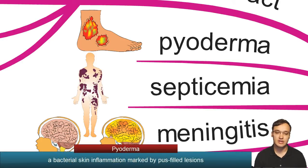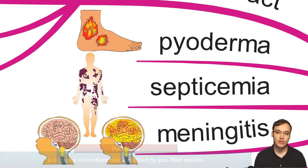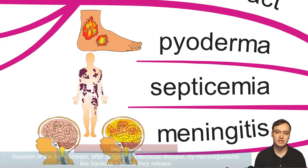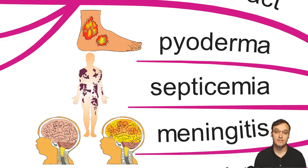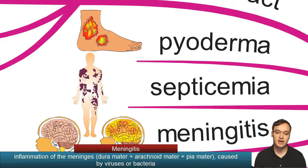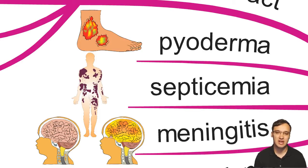Pyoderma shows reddish coloration of the skin with edema and pus — a serious bacterial skin infection. Septicemia involves blood and pus spreading under the skin systemically and is very fatal. Meningitis shows the brain with a yellowish-orange-reddish color, meaning pus and blood filling the meningeal space around the brain. These are unfortunately the things we can see in these patients.